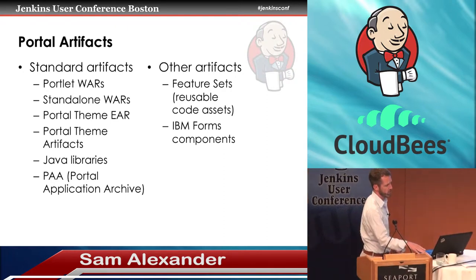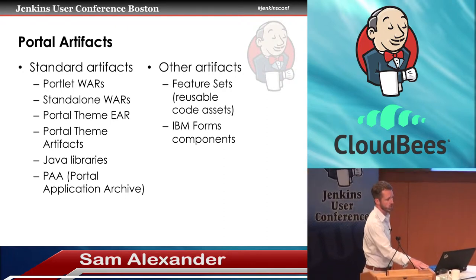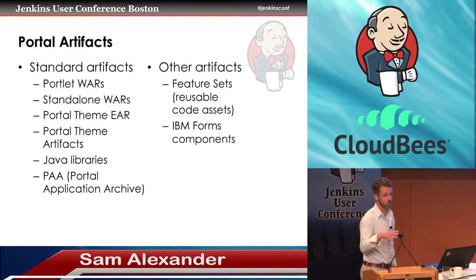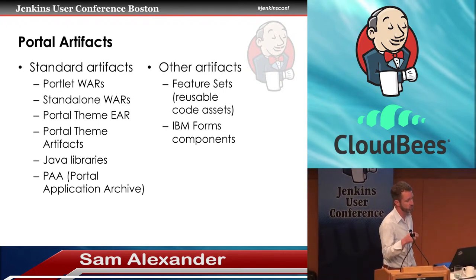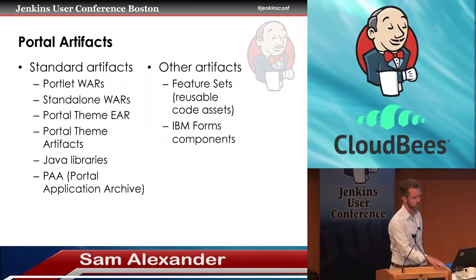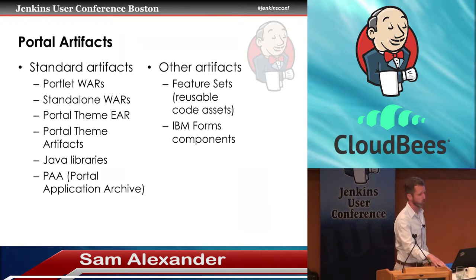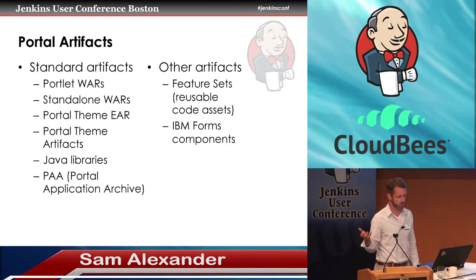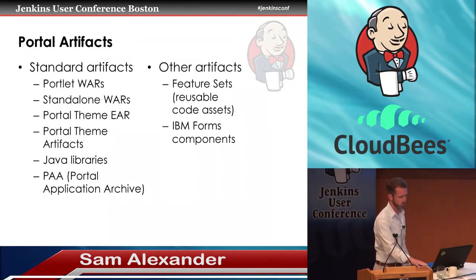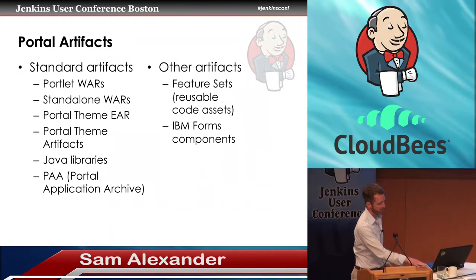You can hand this portal application archive off to portal's config engine and deploy your entire solution in one fell swoop. We're also building other types of artifacts with Jenkins and Maven, including reusable code assets we call feature sets, where you develop functionality as a reusable asset and apply it to other projects. We're also building things like IBM form components.